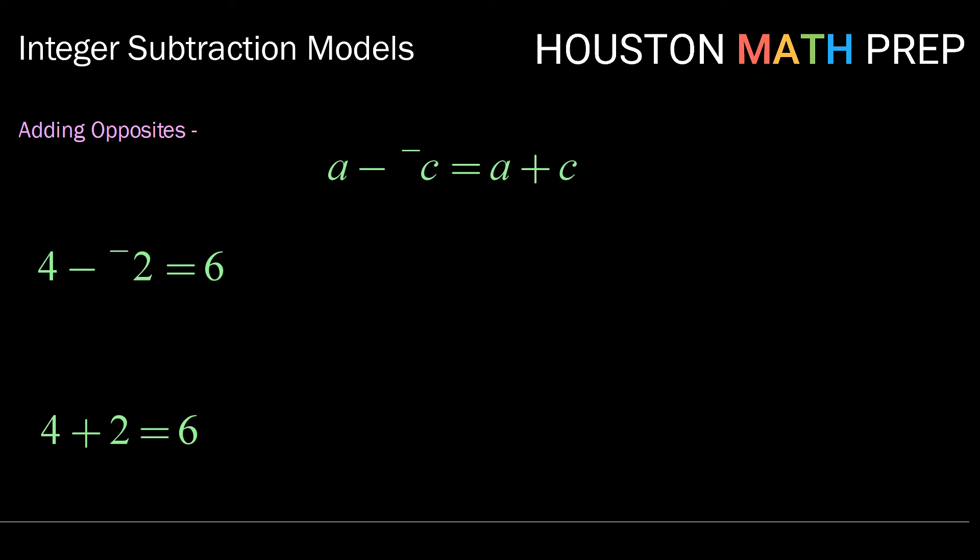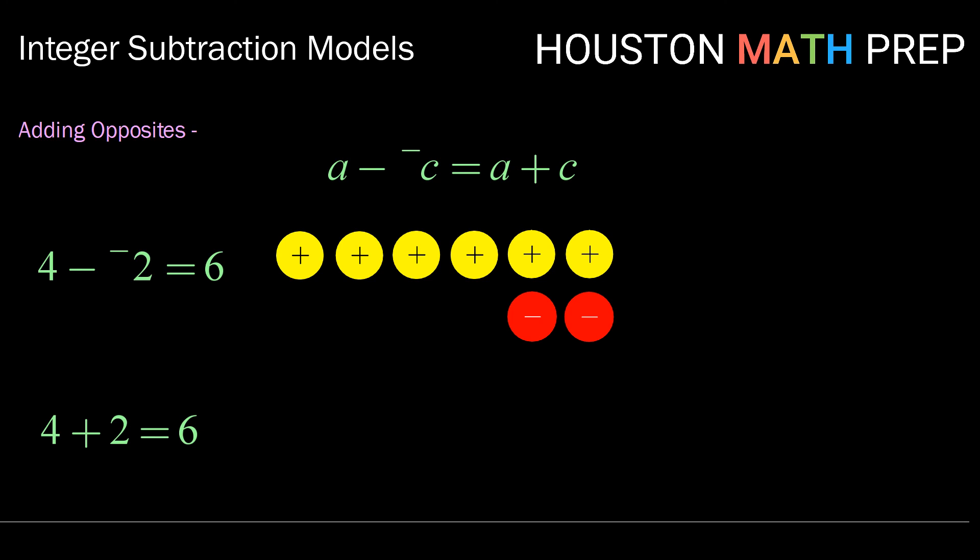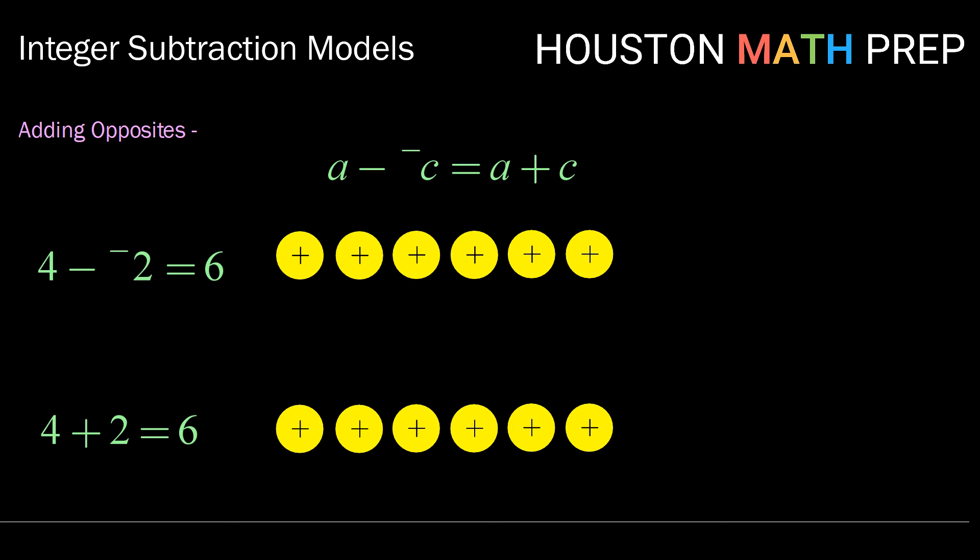Let's take the other one now, a minus negative c being equal to a plus c. We're going to model this one with the chip model. So let's take the example four minus negative two. We've shown already with the chip model that that's equal to six, but let's see it again. We start with four and we want to take away negative two. But since we don't have any negative chips to take away, we add two copies of zero by taking and adding a positive and a negative. We then remove our negative two chips and we are left with six positive chips. To model four plus two using chips, we would take four positive chips and add two more positive chips, ending again with six positive chips. So here, adding the opposite, in this case adding two, was the same as subtracting negative two.